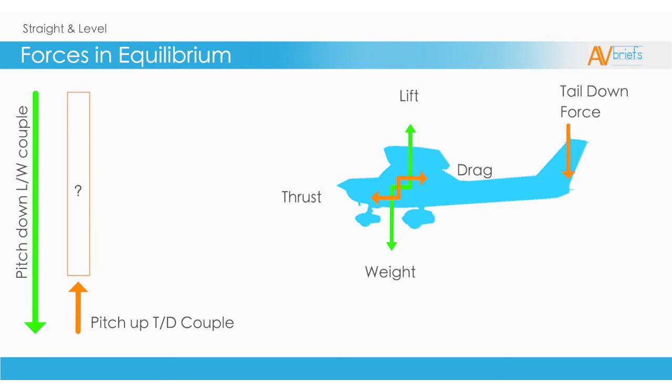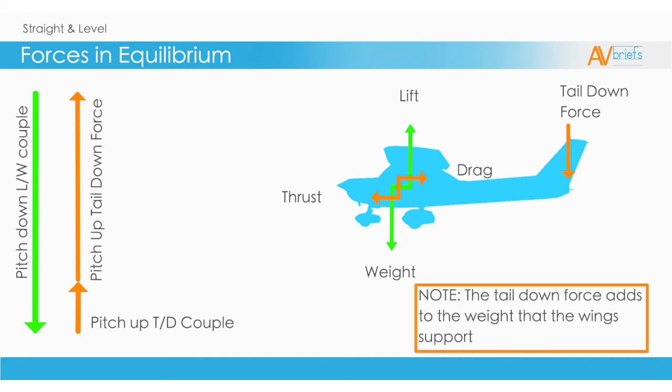This is achieved by the elevator and the horizontal stabilizer. The tail down force adds to the weight that the wings support. It essentially is adding weight to the airplane in flight. Another important point is that the tail down force is acting around the same axis the other forces are acting through.